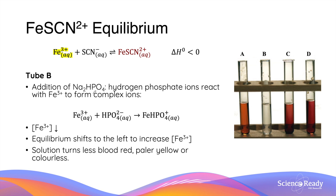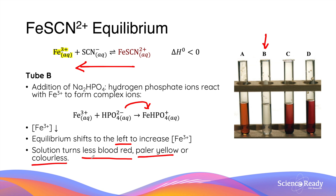The addition of sodium hydrogen phosphate, as shown by test tube B, will react with iron 3+ ion to form another complex ion — iron hydrogen phosphate. This decreases the concentration of iron 3+, which, applying Le Chatelier's principle, shifts the equilibrium to the left towards the reactant side, increasing the concentration of iron 3+ ions. Because iron 3+ has a pale yellow colour and iron thiocyanate has a blood red appearance, the solution turns less blood red and more pale yellow, as the concentration of iron thiocyanate decreases.